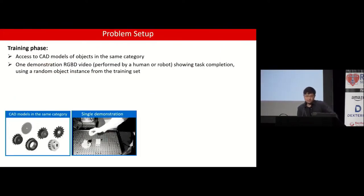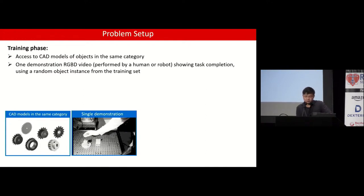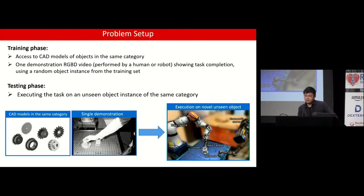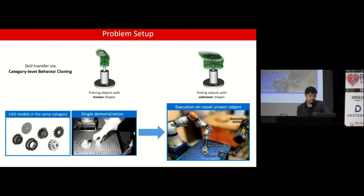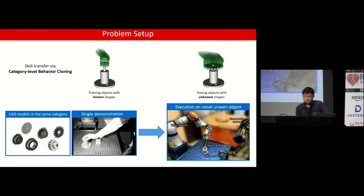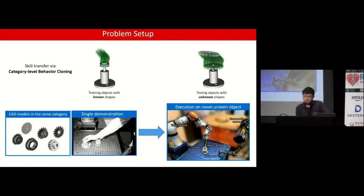To clarify more about our problem: during the training phase, we assume access to the object CAD models in the same category and are given one demonstration RGBD video. During the testing phase, our goal is to execute the task on a novel unseen object instance in the same category. We formalize this as category-level behavior cloning — we extract the trajectory from the single visual demonstration and then generalize this trajectory to novel unknown instances.